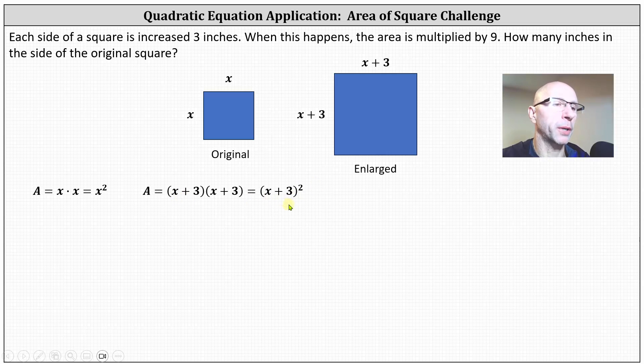Right now, the square of x plus three is nine times as large as x squared. And therefore, to form an equation, we can set nine times x squared equal to the area of the large square, which is the square of x plus three, or two factors of x plus three. And now we need to solve for x.